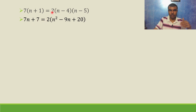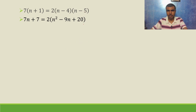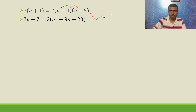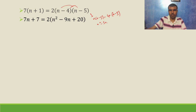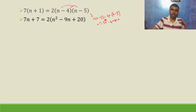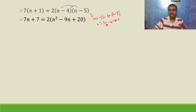So 7n + 7 equals 2 into (n squared minus 9n + 20). To expand (n-4)(n-5): n into n is n squared, n into minus 5 is minus 5n, minus 4 into n is minus 4n, minus 4 into minus 5 is plus 20. So n squared minus 9n plus 20. Multiplying by 2 gives 2n squared minus 18n plus 40.